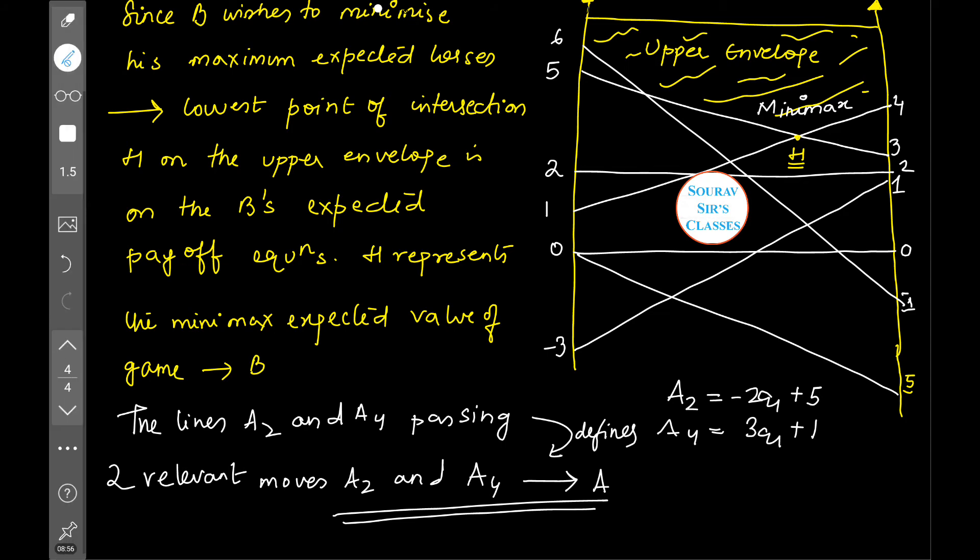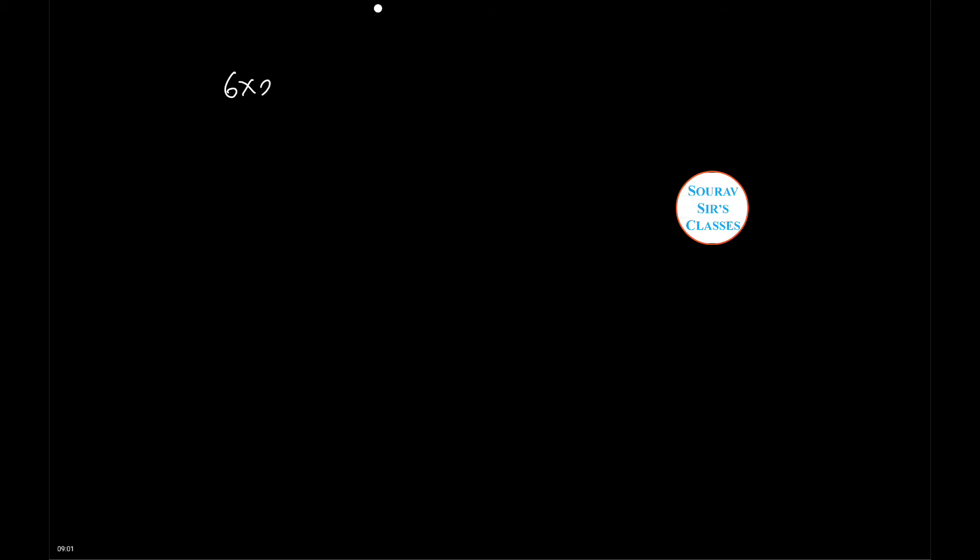The player A will play only A2 and A4, so the original 6 into 2 matrix gets reduced to 2 into 2 matrix. Since it plays only A2 and A4, the payoff matrix now can be written as [3, 5; 4, 1].